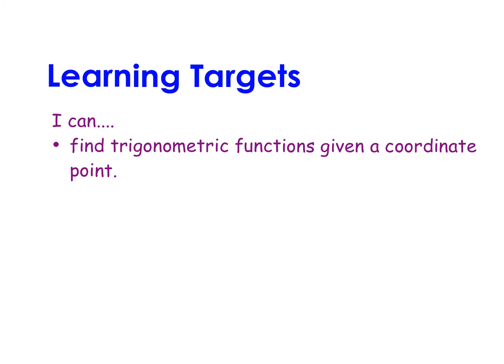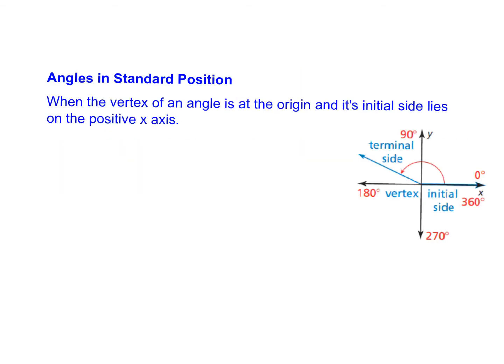In this video, we're going to be finding all of the trigonometric functions of an angle written in standard position on the coordinate plane using a coordinate point. Just to refresh your memory on angles in standard position: they always start at the vertex, go out with their initial side on the x-axis, move counterclockwise as we're measuring, and then have a terminal side somewhere around the coordinate plane.